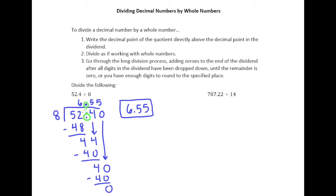Divide as if working with whole numbers, which is what we did. And then we continue the long division process, adding zeros at the end of the dividend. So this part right here was what we did right there. Adding zeros at the end of the dividend after all digits in the dividend have been dropped down.